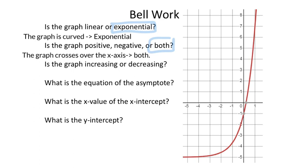Is the graph increasing or decreasing? We just look at this going from left to right. I would start here at the bottom, the furthest point to the left, and as I go to the right I can see it goes up and up. Since it is going up, that tells me this one is increasing.